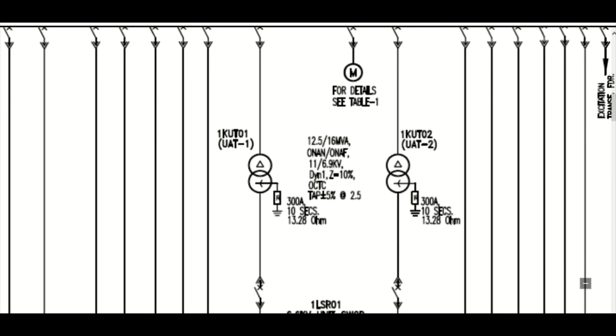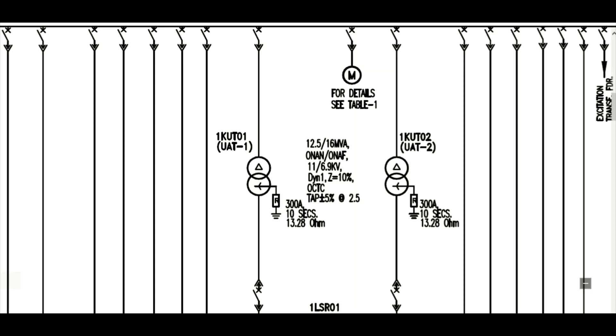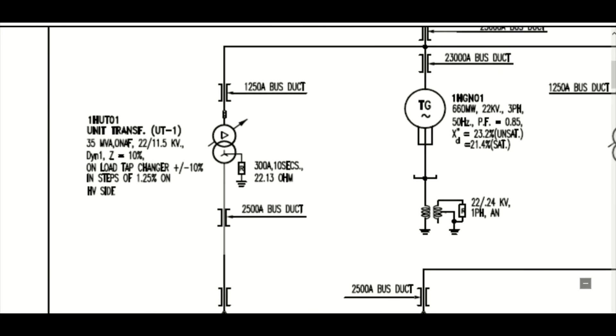The 11 kV power supply is coming for further distribution at the 415 volt or 6.6 kV system. Here you can see UAT1 and UAT2 — these are the two unit auxiliary transformers. The voltage is stepped down from 11 kV to 6.9 kV. The transformer ONAN rating is 12.5 MVA and ONAF rating is 16 MVA. This is an off-circuit transformer. For the unit transformer, this is OLTC — on-load tap changer — plus/minus 10% in steps of 1.25%.